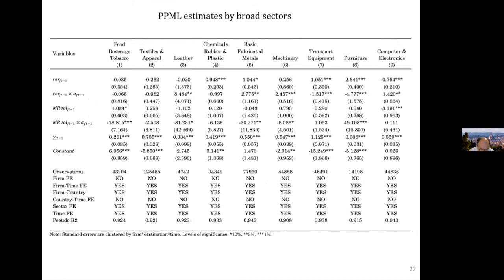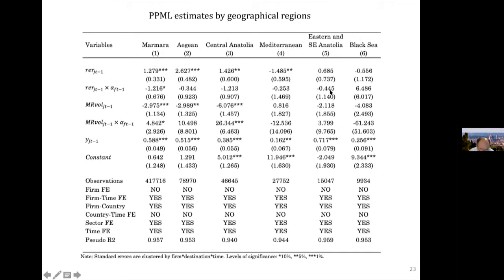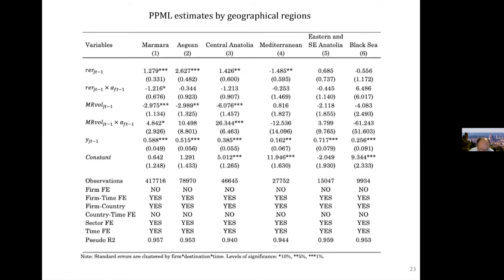Looking at broad product categories, significant export effects appear for furniture, transport equipment, chemicals, and basic fabricated metals, but not other sectors. The effect of the alpha term also appears only in certain sectors. In the regional analysis, the positive effect of lira depreciation appears in certain regions — more in the Aegean, Marmara, and Central Anatolia — but not in the Mediterranean. The alpha term is statistically indifferent from zero across regions with the exception of Marmara. Next steps include examining the extensive margin, more detailed pre- and post-2011 analysis, and quantile distribution analysis of trade-exchange relationships.